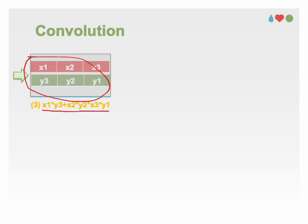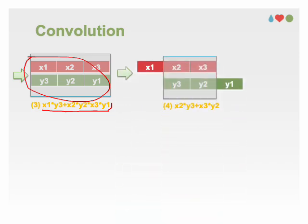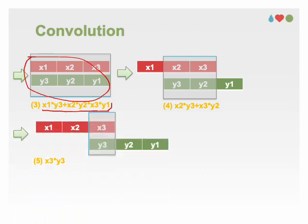X1, y3, x2, y2, x3, y1. We continue shifting the vectors until we reach a single overlap where the convolution becomes x3 multiply y3.